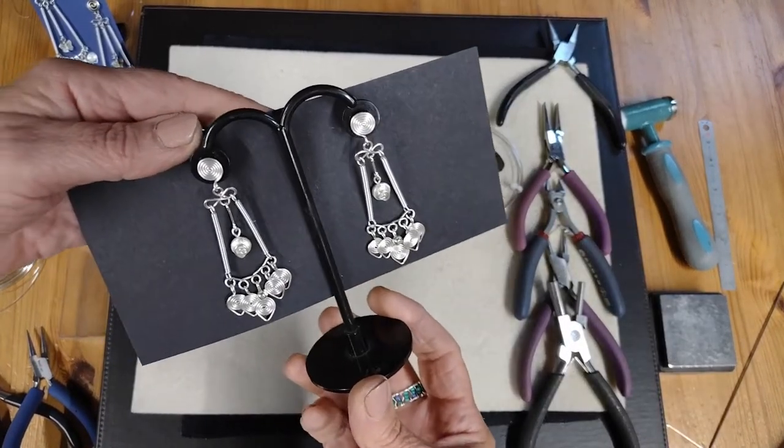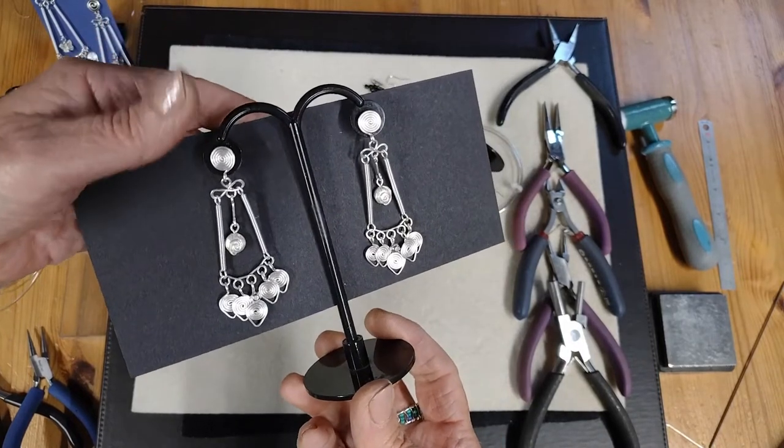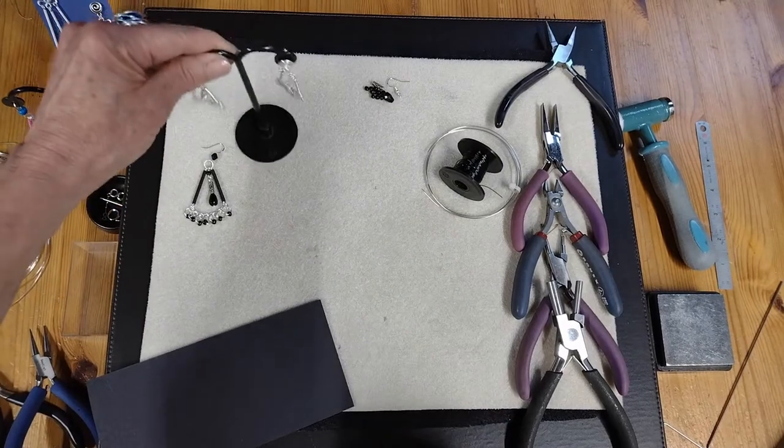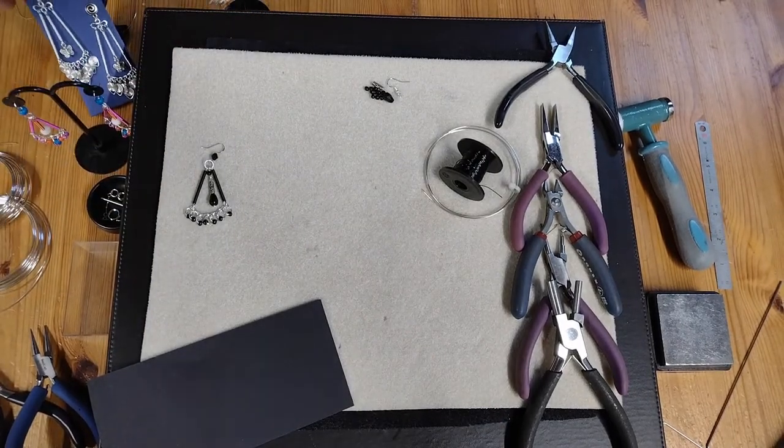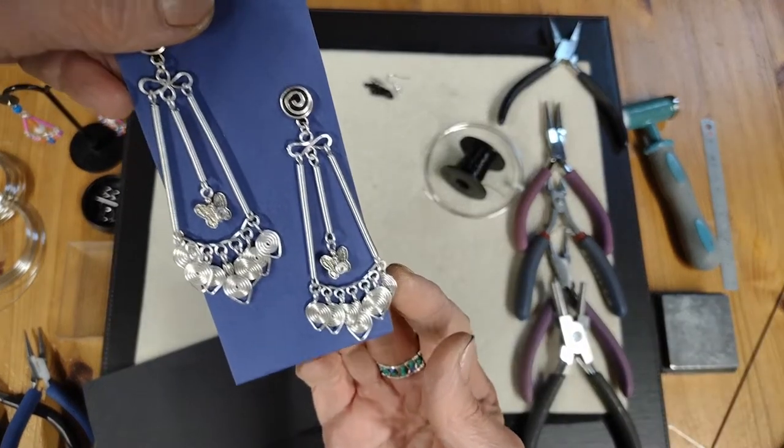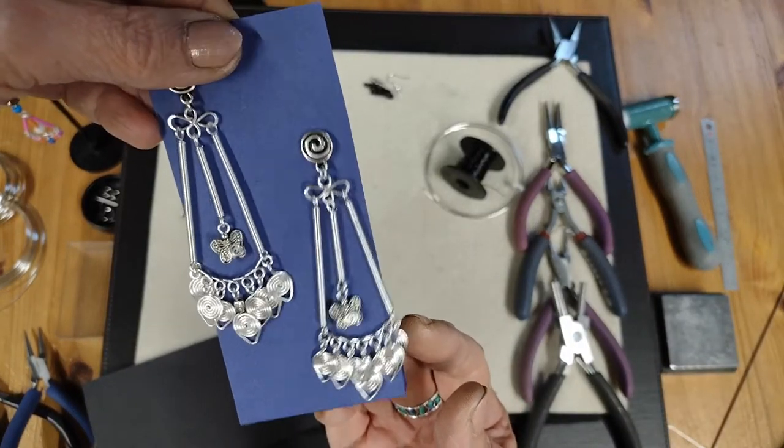They're very slightly dramatic earrings. You can make them as long or as short as you want and you can put any colored beads or any colored wire, so they can be any variation. But I like them quite neutral, so I've made these in silver.